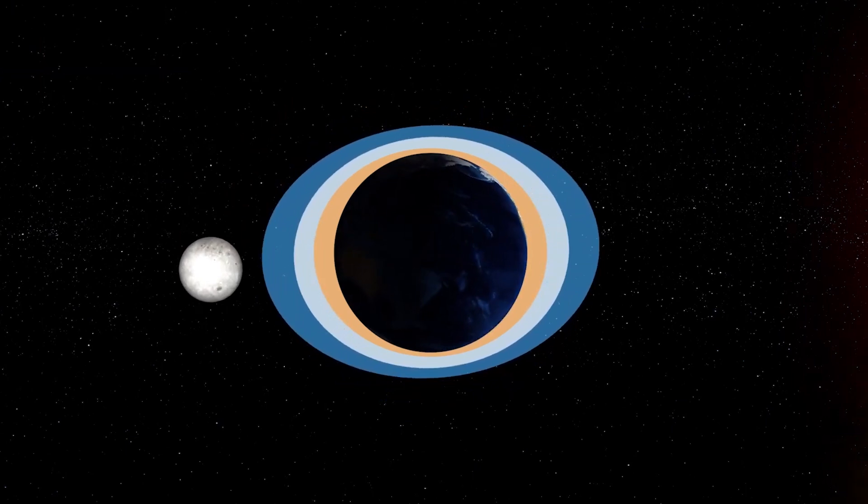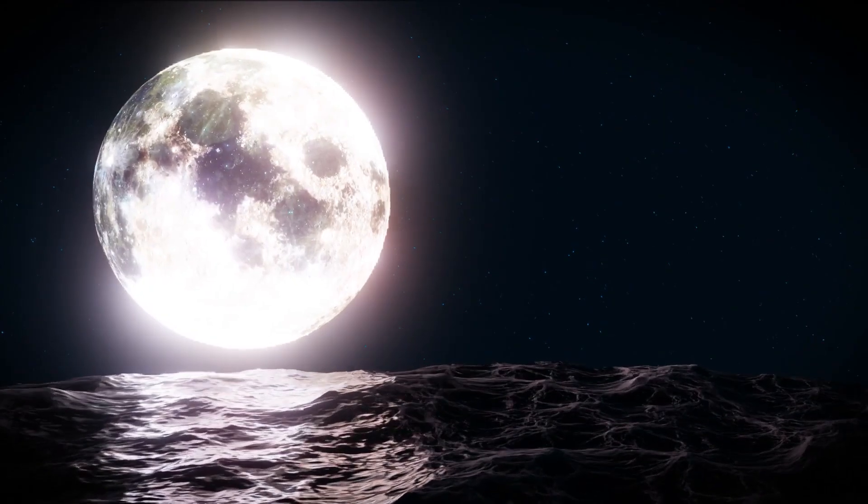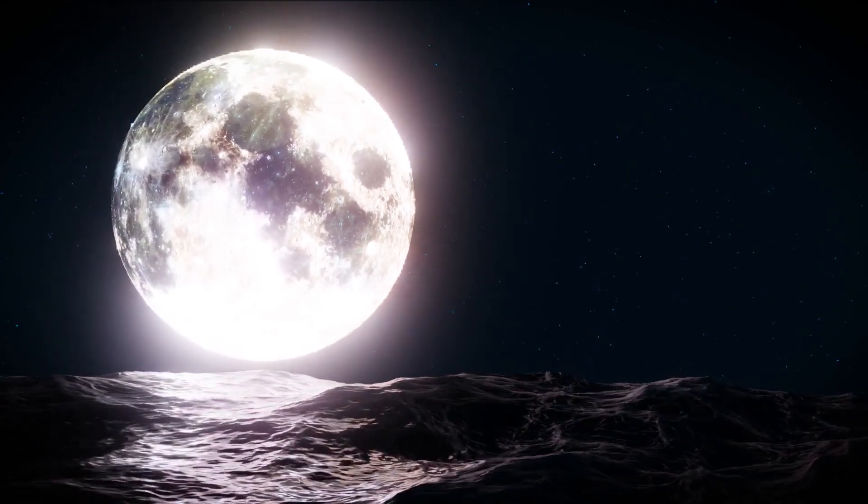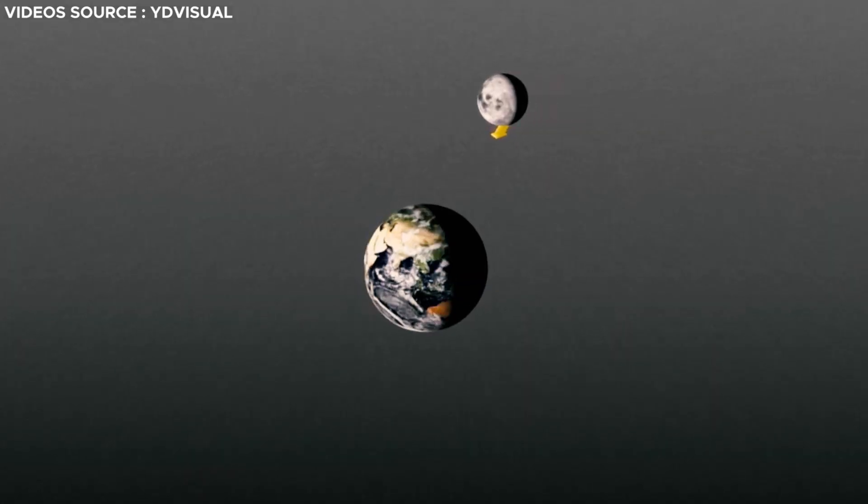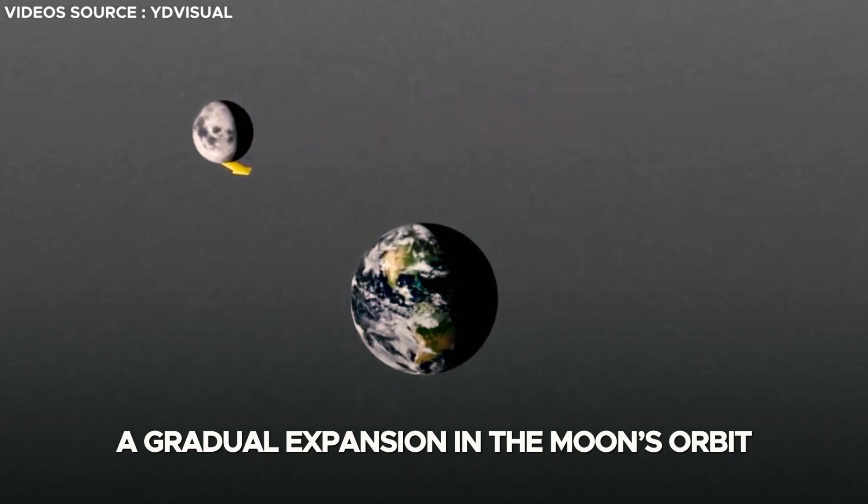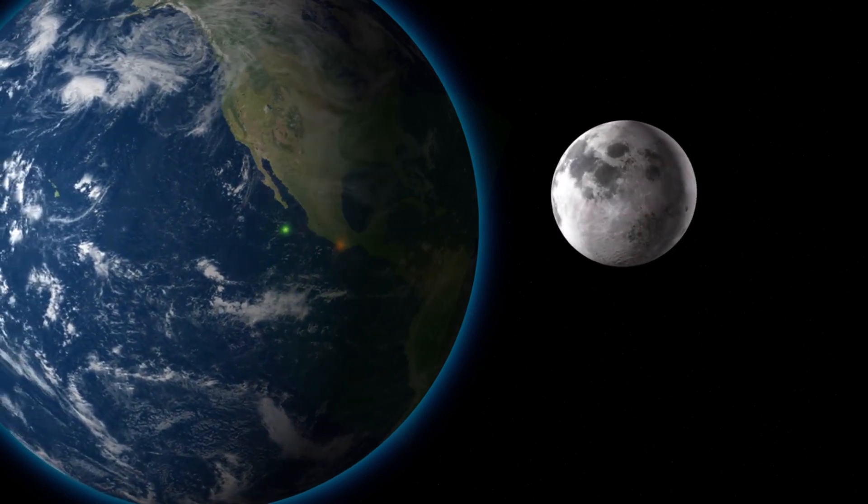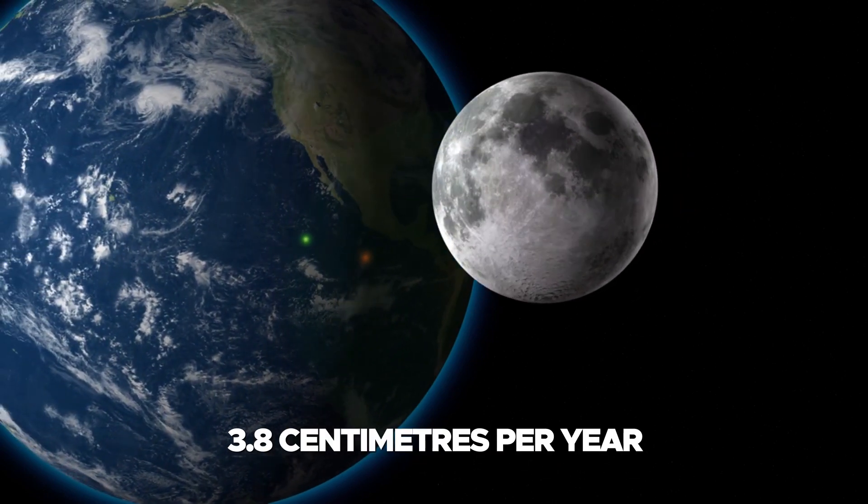Since those early times, the moon has orbited Earth, wielding a gravitational force that governs the rhythmic rise and fall of tides. However, scientists have observed a gradual expansion in the moon's orbit over time. This implies that the moon is gradually distancing itself from Earth at an approximate rate of 3.8 centimeters per year.